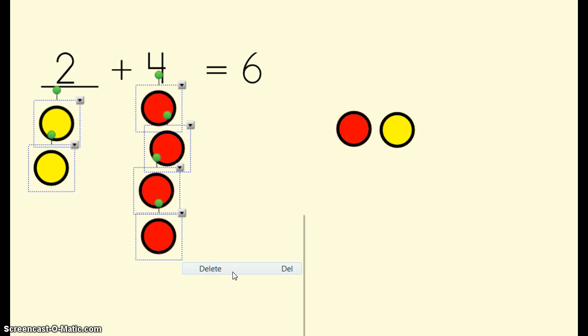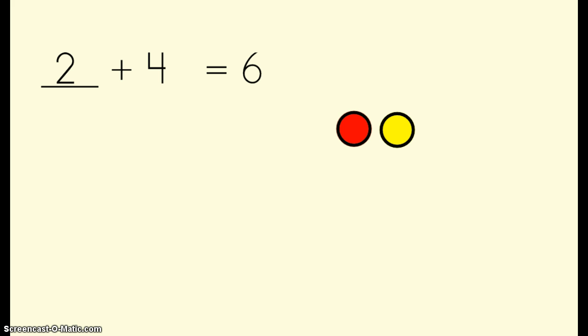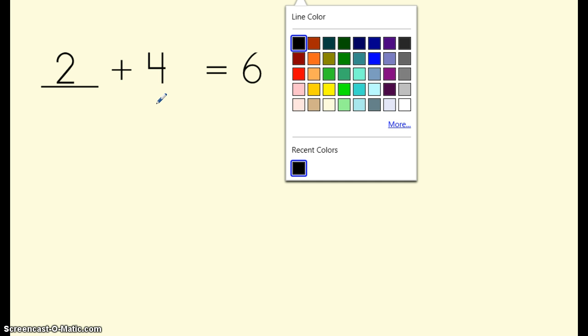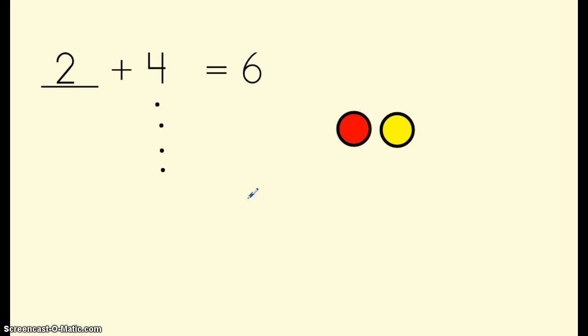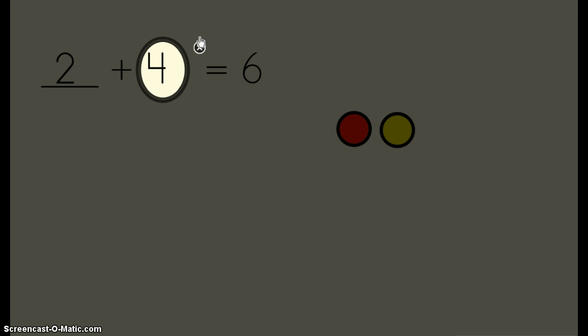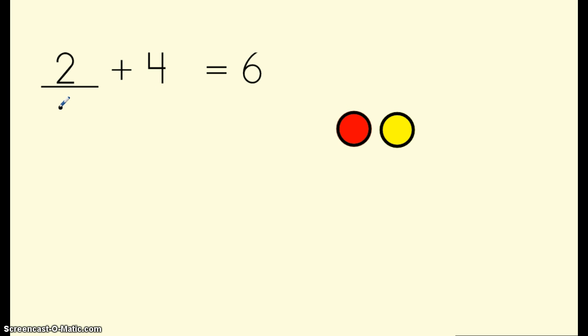If your teacher doesn't give you counters tomorrow you could use your pencil. 1, 2, 3, 4 dots and figure out that you need 5, 6, 2 more dots to get to our whole of 6. You could also circle the 4 and count on 4, 5, 6. You still know that you need 2 more to get to our whole which is 6. 2 plus 4 equals 6. That's one way you could find the unknown addend by using counters or drawing dots.